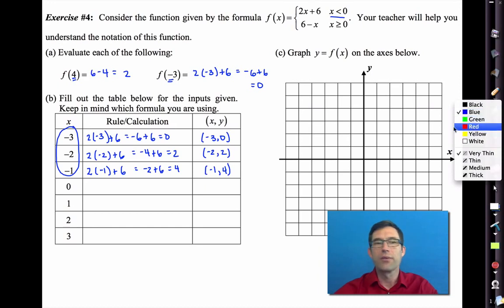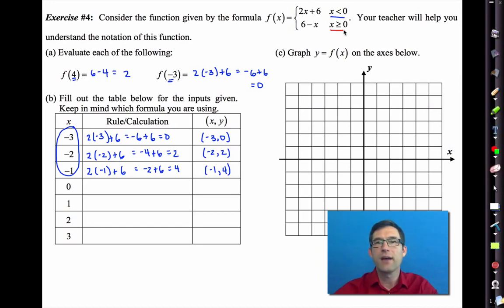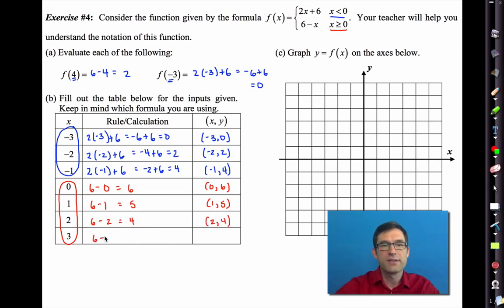But now let me go with a different color. Maybe that'll help us out. Anytime x is greater than or equal to 0, we use this formula. That's going to be for all of these. So what does that formula say? It just says do 6 minus the input. That's going to be easy. So we get 0, 6. Here we'll have 6 minus 1. So that'll give me 5. That'll be 1 comma 5. Then I'll do 6 minus 2. That'll give me 4. So 2 comma 4. And finally 6 minus 3, which gives me 3. So 3 comma 3.